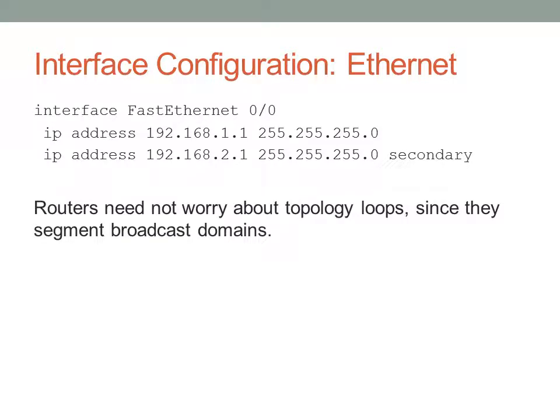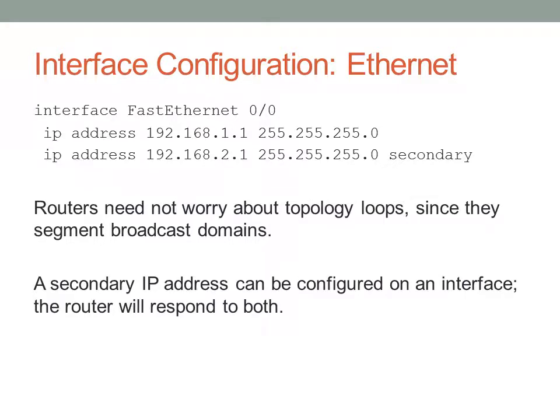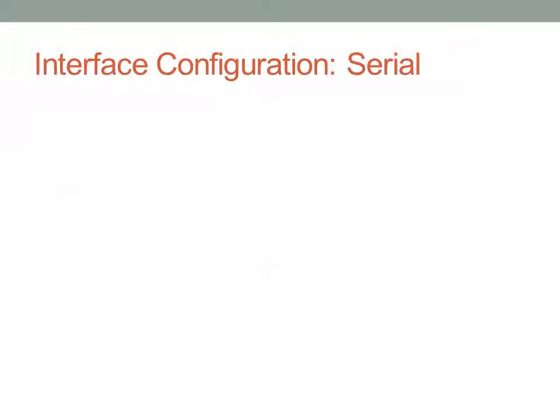Routers don't need to worry about topology loops, which is why you don't see any spanning tree configuration. They segment broadcast domains, so Ethernet broadcasts on one interface will not go out another interface — routers do not flood Ethernet broadcasts. A secondary IP can be configured and the router will respond to both.